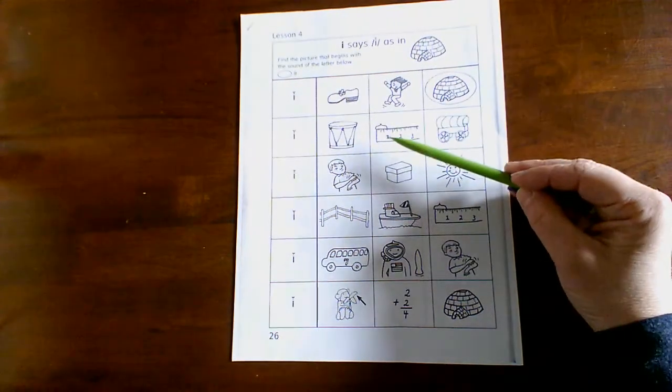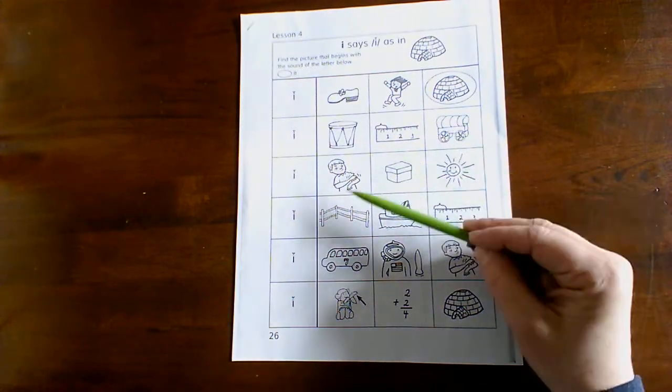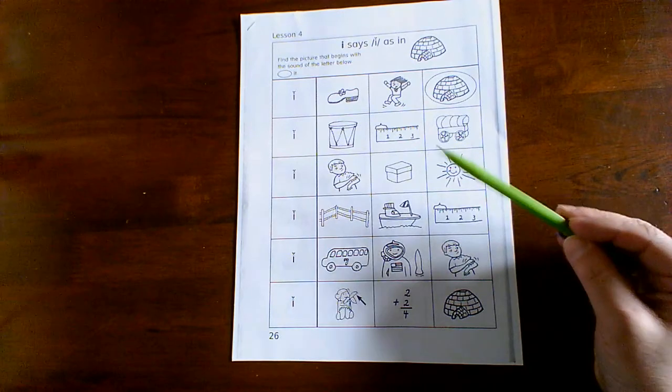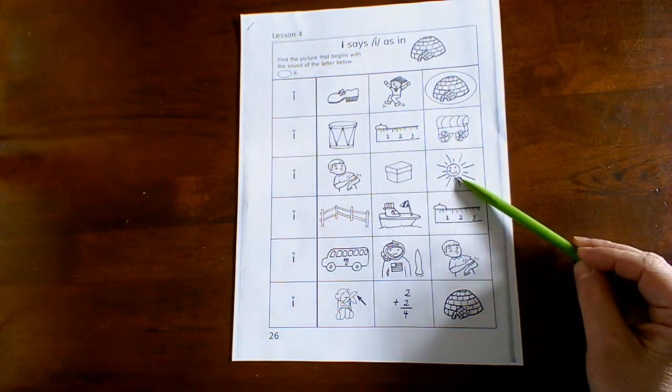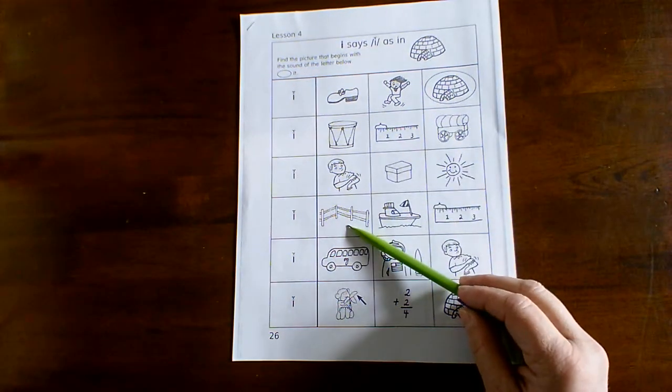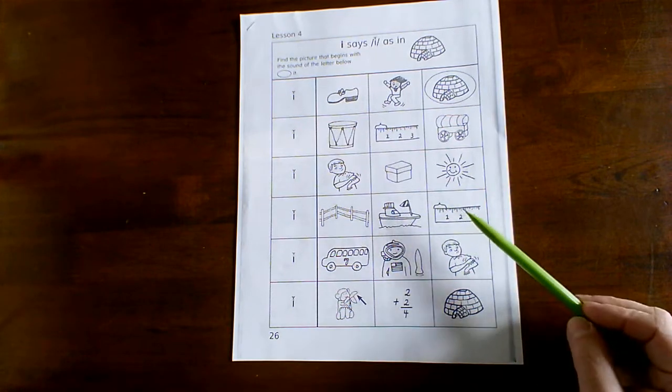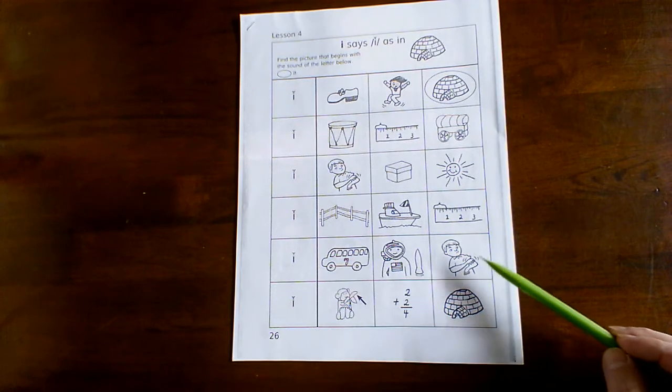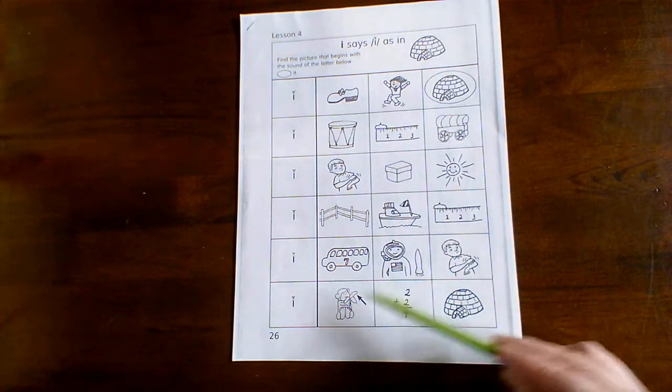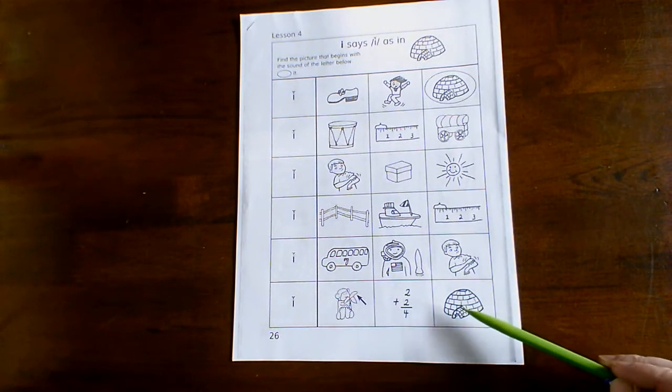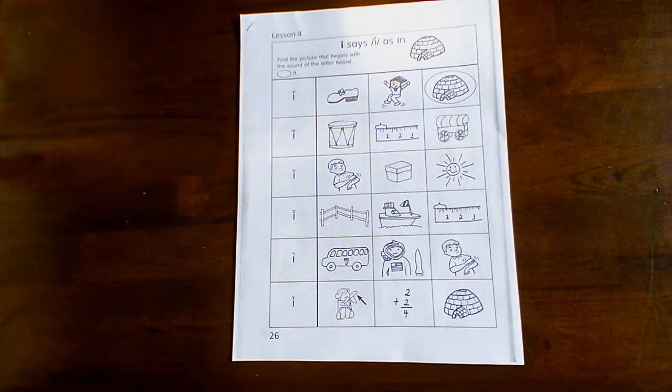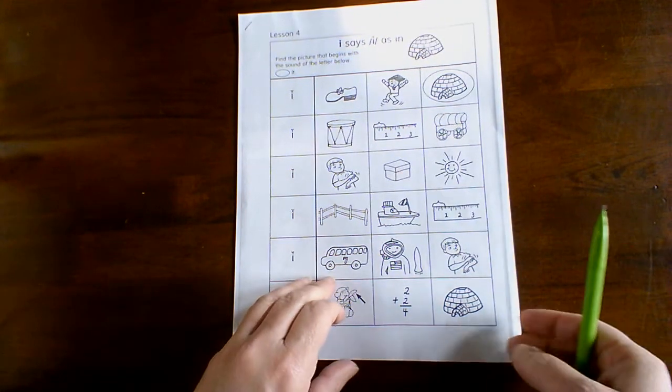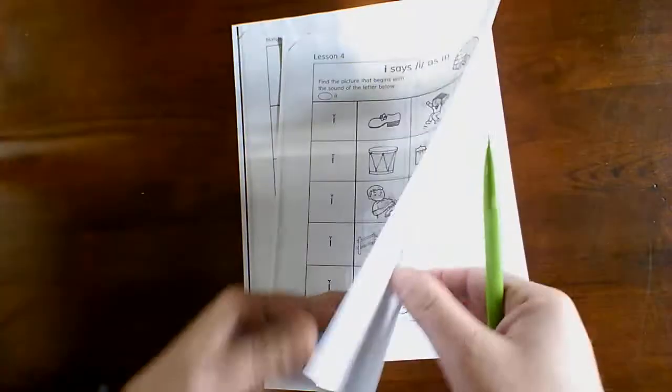So in this row, we have drum, itch, wagon, itch, box, sun, fence, boat, inch, bus, astronaut, itch, banana, and igloo. Okay. So circle the one that starts with I in each row.